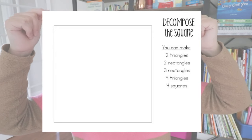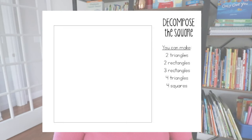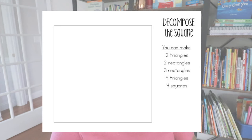For decomposing shapes, I like to make large black-and-white shape outlines — for example, a square — and laminate them so students can use dry erase markers. They show different ways to decompose the square into other shapes: two triangles, two rectangles, three rectangles, four triangles, or four squares. They can erase and try again each time, which makes it a fun, reusable activity for seeing how many different ways one shape can be broken apart.